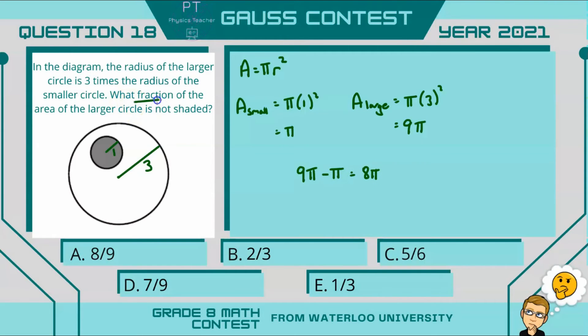So if we want to find out the fraction of the area of the larger circle that is not shaded, well, the area that is not shaded is 8 pi, and is a fraction of the area of the larger circle, which is 9 pi. Your pi's will cancel, and that fraction will be 8 over 9, or our answer is a.